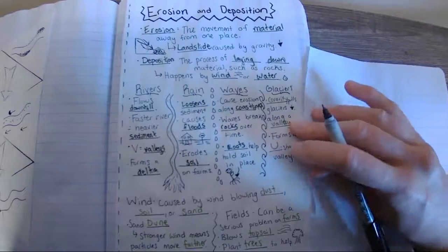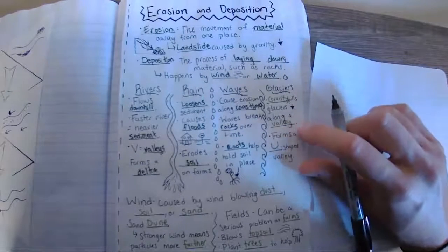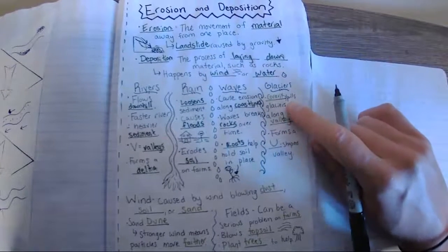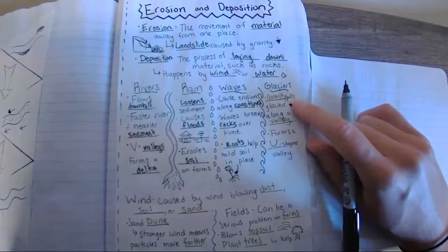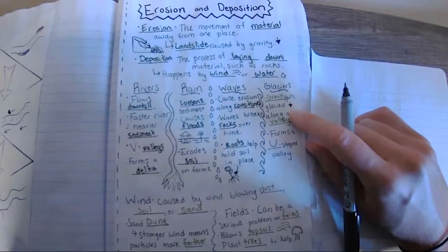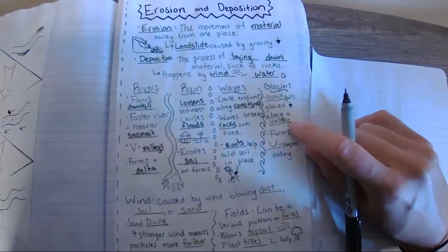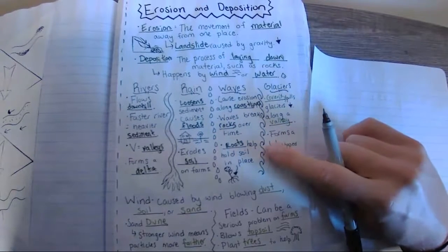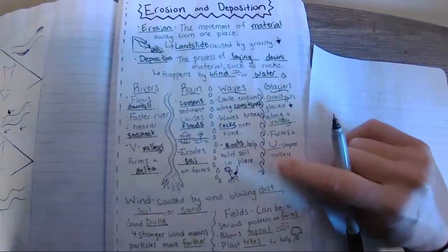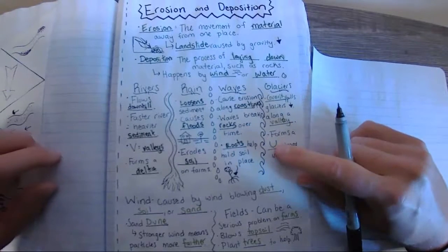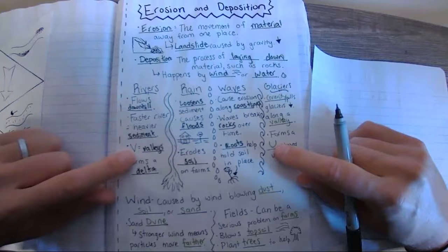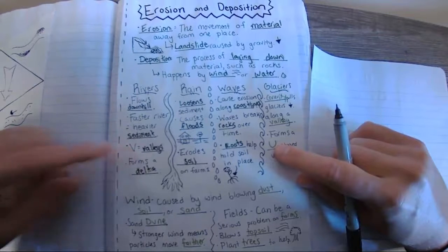Now, we've got glaciers. Glaciers are a unique system that we don't often think about because we don't see them all too often. But glaciers are caused by gravity pulling on the glaciers and dragging them along a valley. Then, they end up forming a U-shaped valley. So an important difference to note is that glaciers make these U-shapes, whereas rivers form the sharper V-shaped valleys.